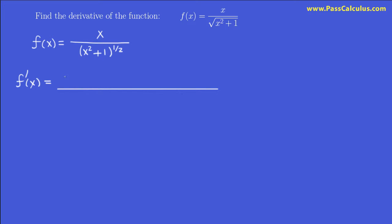The derivative of the top here is one, times the bottom left alone, minus the top left alone, times the derivative of the bottom.